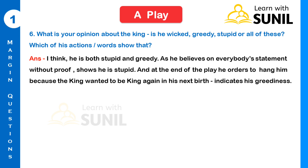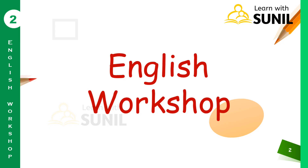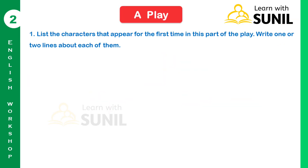Answer: I think he is both stupid and greedy. He believes everyone's statements without proof, which shows he is stupid. At the end of the play, he orders himself to be hanged because the king wanted to be king again in his next birth, which indicates his greediness.